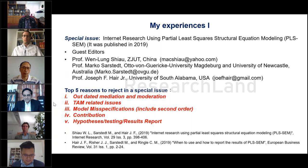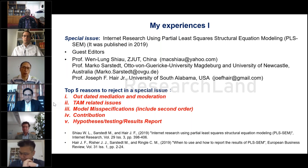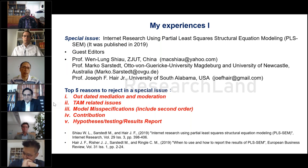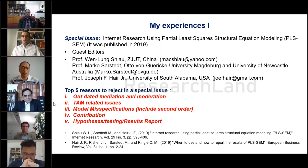The third reason is misspecification — reflective versus formative. If you specify your model incorrectly, we will reject it, especially if you include second-order constructs without proper justification. The fourth reason is contribution: if your contribution is not clear, we reject your paper. The fifth reason is that hypotheses and testing must be consistent.